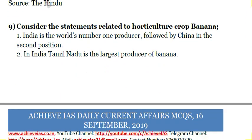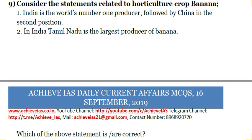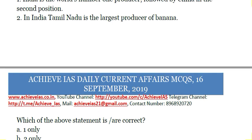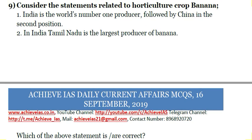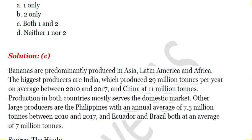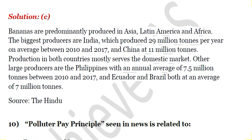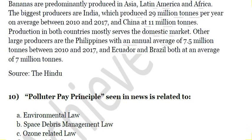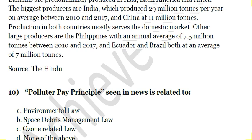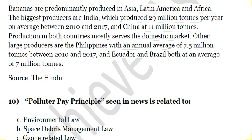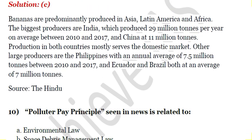Ninth question: Consider the following statements related to the horticulture crop banana. First, India is the world's number one producer, followed by China in second position. Second, in India, Tamil Nadu is the largest producer of banana. Both statements are correct. Bananas are predominantly produced in Asia, Latin America, and Africa. India produced 29 million tons per year on average between 2010 and 2017, significantly ahead of China. Tamil Nadu is the largest producer among Indian states.